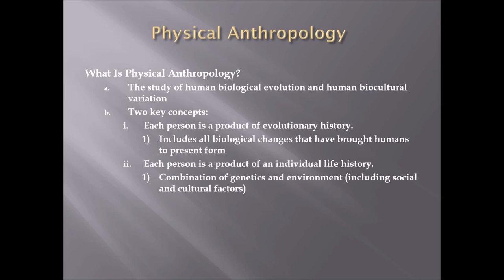How are you the product of your evolutionary history? Why do you look the way you look? You get that from your parents and their parents going back. Your ancestry — that's a better term than 'race' — your shape, the color and type of your hair, whether you have good or bad vision: all these things come from your evolutionary history, from your genetics, passed down through generations.